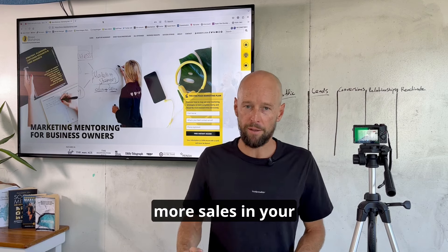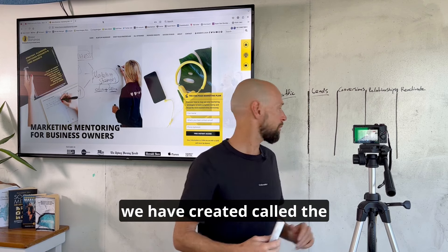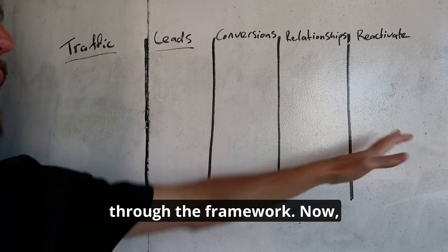I'd like to show you how to get more sales in your small business. We have this framework which we have created called the marketing ecosystem. There are five different columns through the framework.